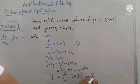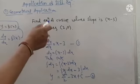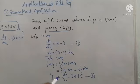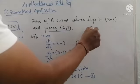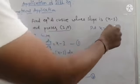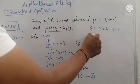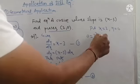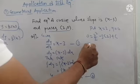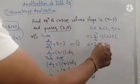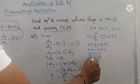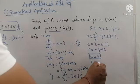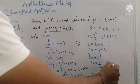We add the constant of integration C. The condition given is that the required curve passes through the point (2, 0). Substituting x = 2 and y = 0 into the equation: 0 = 2 squared by 2 minus 3 times 2 plus C, giving 0 = 2 minus 6 plus C, so C = 4.